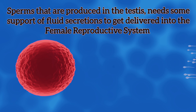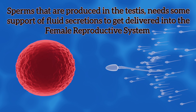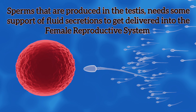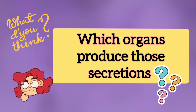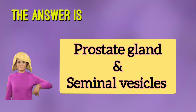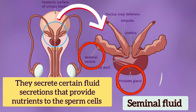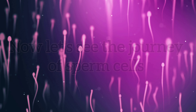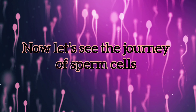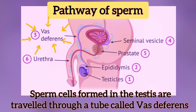Sperms produced in the testes need the support of fluid secretions to get delivered into the female reproductive system. The prostate gland and seminal vesicles secrete certain fluid secretions that provide nutrients to the sperm cells. Now let's see the journey of sperm cells — sperm cells formed in the testes travel through a tube called the vas deferens.